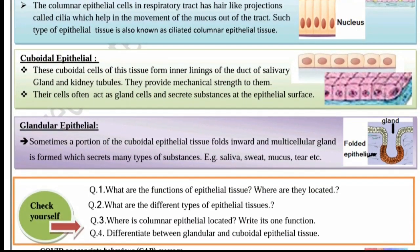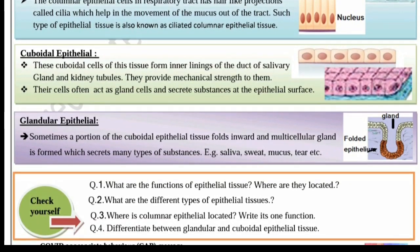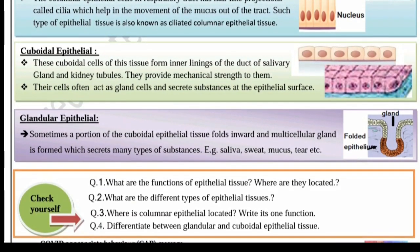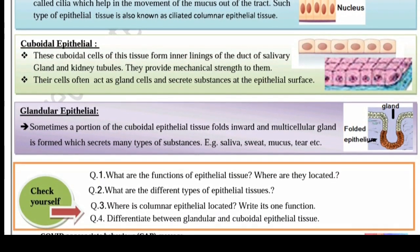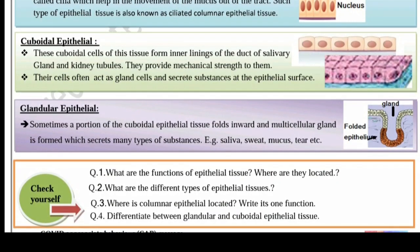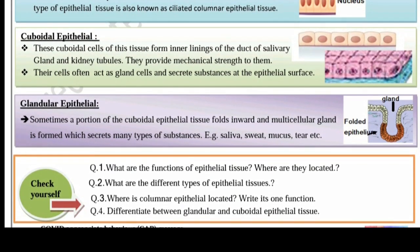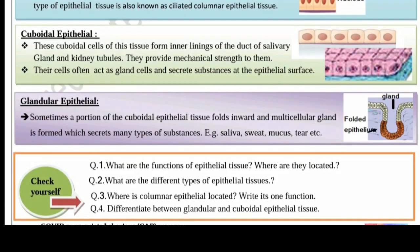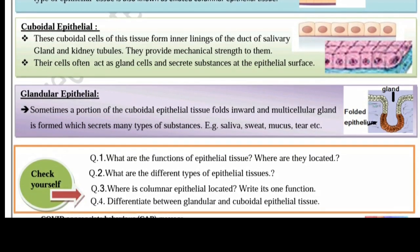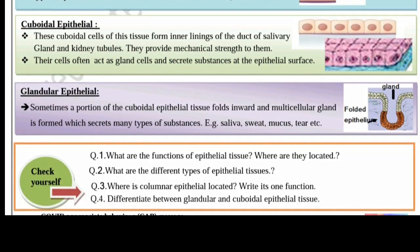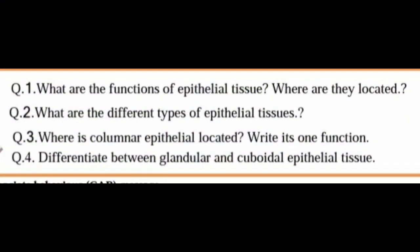Glandular epithelial: sometimes a portion of the cuboidal epithelial tissues folds inward and a multicellular gland is formed, which secretes many types of substances such as saliva, sweat, mucus, tears, etc. Let us now discuss the question: what are the functions of epithelial tissue and where are they located?